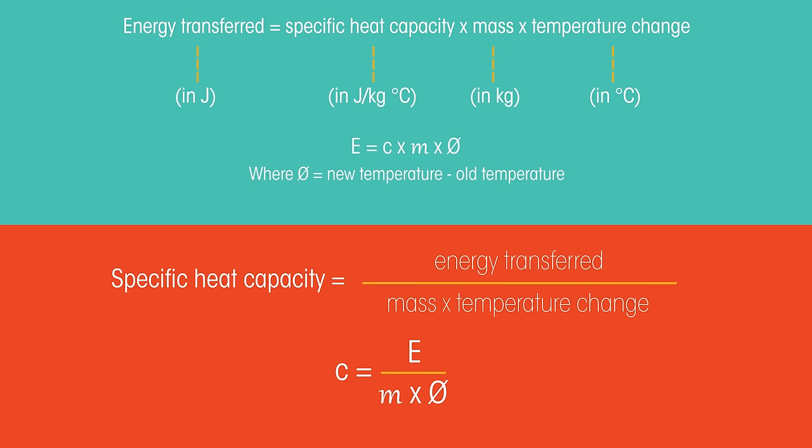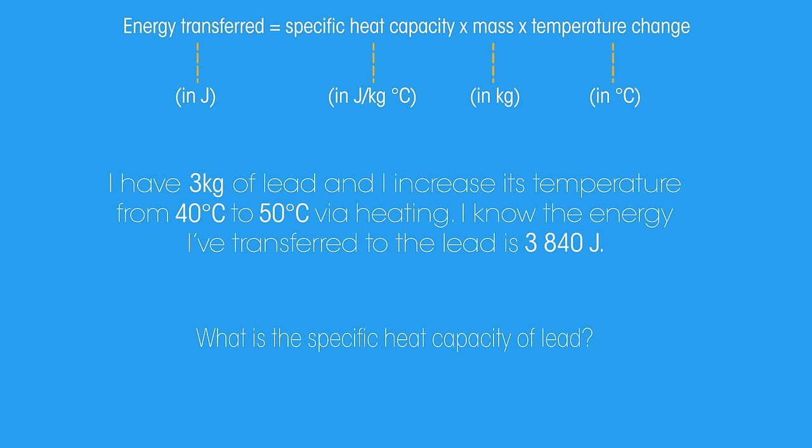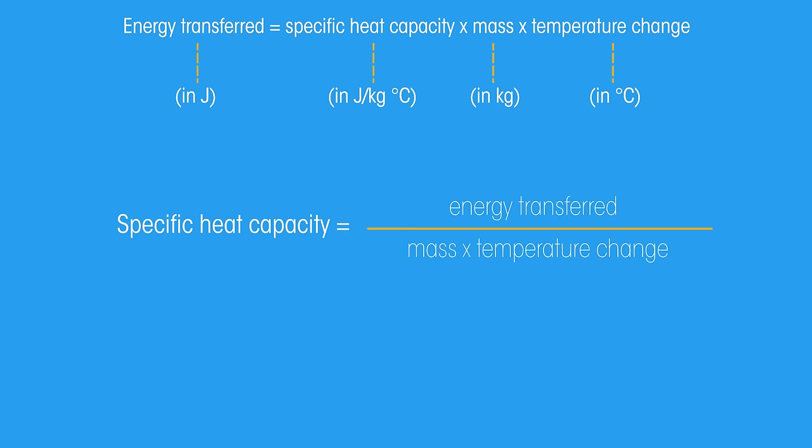Let's have a look at a problem. Pause the video and attempt to calculate the specific heat capacity of lead. How did you get on? The energy transferred is this, the mass is this, and the temperature change is 10 degrees Celsius because it's this take away this. Using the rearranged equation, substitute in the values and we get 128 joules per kilogram Celsius.